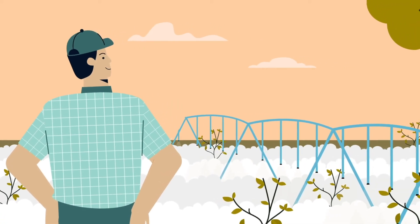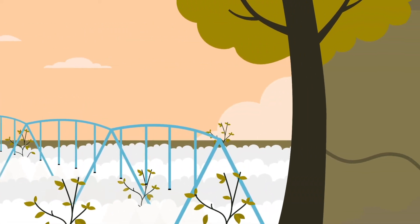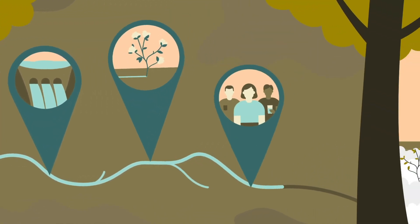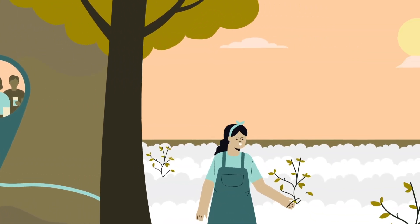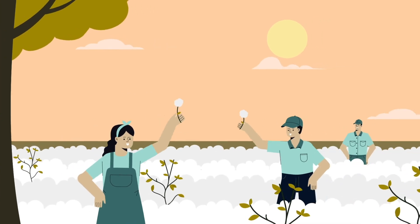We are proud Aussie farmers who follow the rules. We're efficient with water, and we want healthy rivers that can be enjoyed by all of us for generations to come.